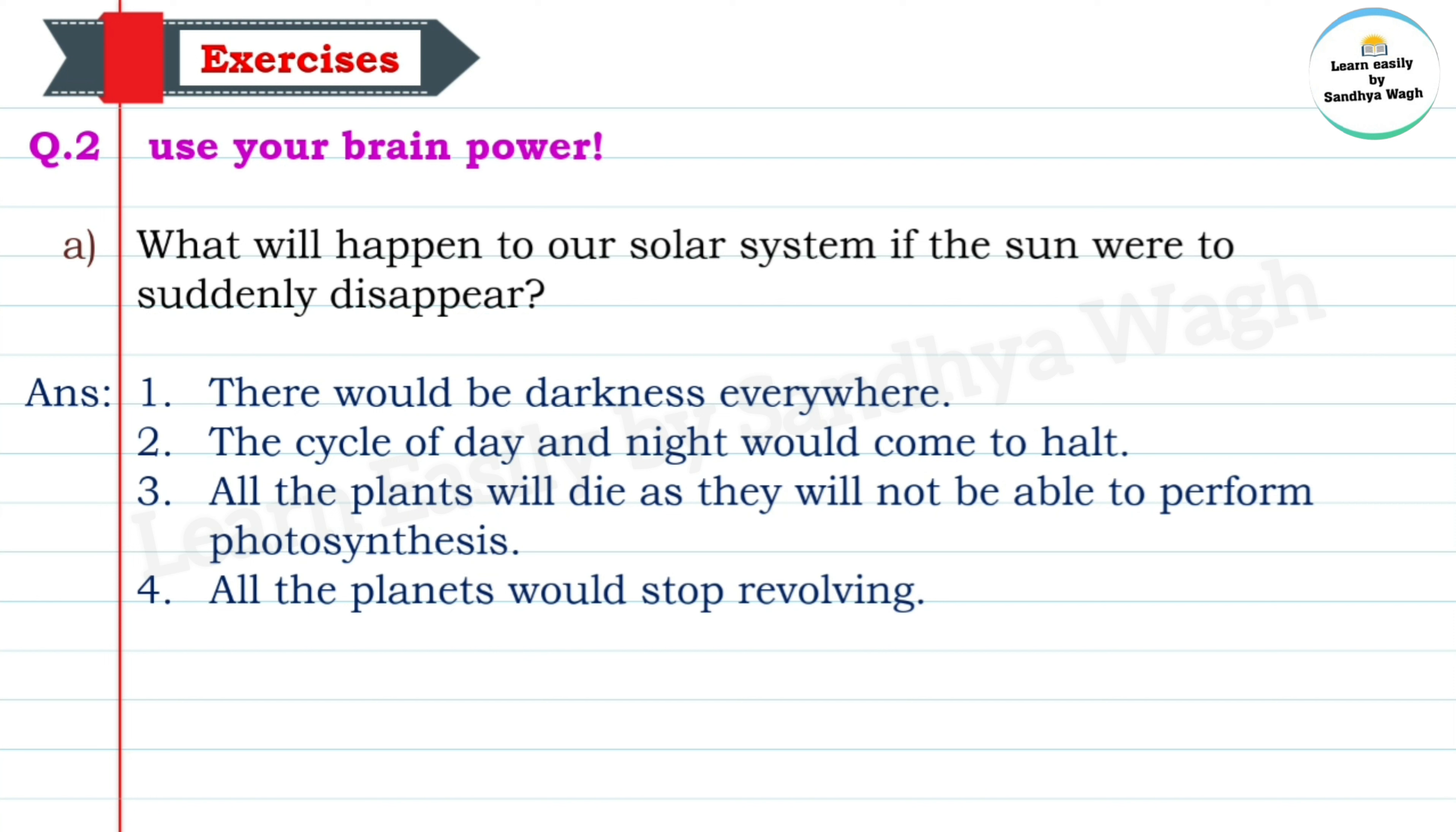The cycle of day and night would come to a halt. All the plants will die as they will not be able to perform photosynthesis. Plants make their food with the help of the sun through the process called photosynthesis. If there's no sun, plants cannot make their food. All the planets would stop revolving. All planets revolve around the sun.